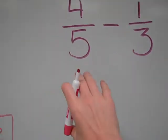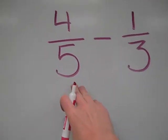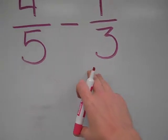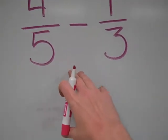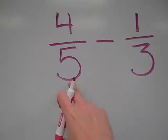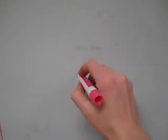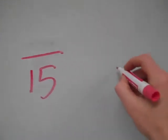I keep my equivalent fraction right underneath 4 fifths. So looking at 5 and looking at 3, I need to think of what are the multiples of 5 and 3. Can I find the lowest common multiple? And so I usually start with the bigger number, 5, 10, 15 works for 3. So I'm going to write a 15 and a 15.